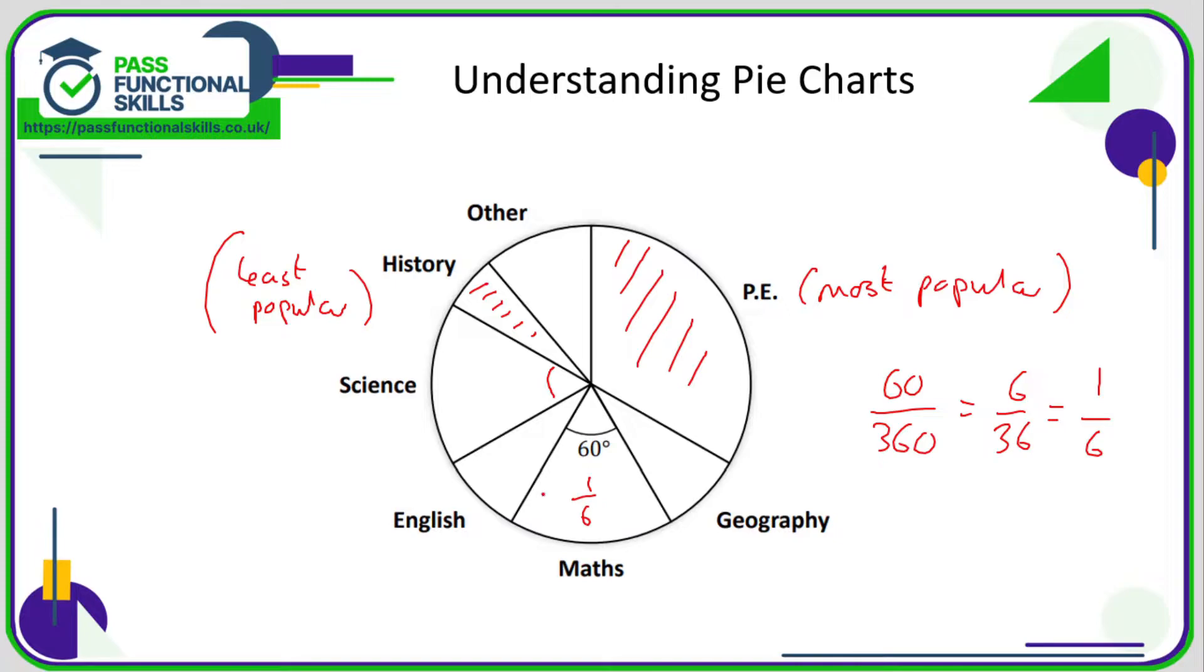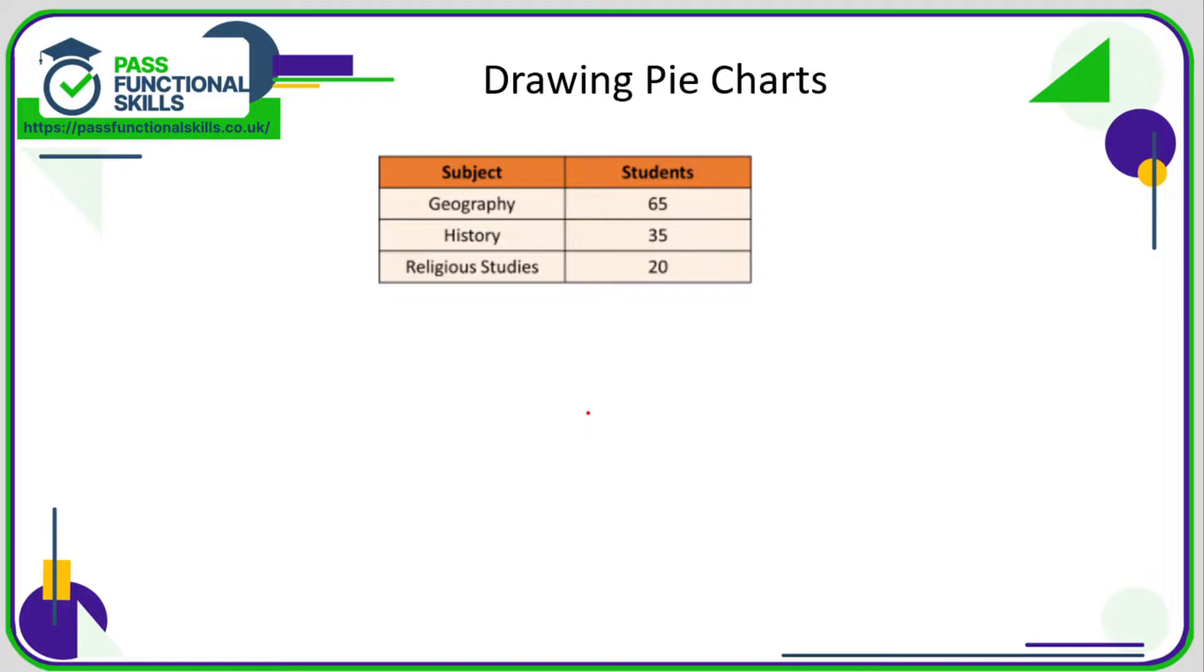So from this information we can say that one-sixth of the school or the year group, or whatever the data source is, a sixth of it said that maths was their favorite subject. Why? Because 60 degrees is one-sixth of 360, 360 degrees being the whole pie.